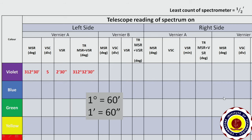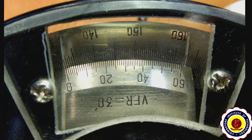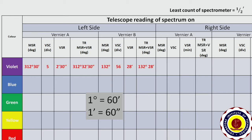We know 1 degree equals 60 minutes and 1 minute equals 60 seconds. Similarly, we have to note the main scale reading and vernier scale coincidence in vernier B. In vernier B, the main scale reading is 132 degrees, and the vernier scale coincidence is 56 divisions, meaning the 56th division is exactly coinciding with the main scale. So the vernier scale reading is 56 × 0.5 minutes = 28 minutes, giving a total reading of 132° 28'.